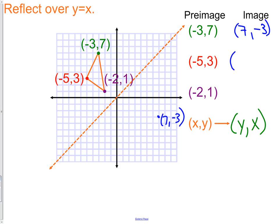That would be true about the red as well. Instead of being at (-5, positive 3), we're at positive 5, or positive 3, -5. Positive 3 and -5. Lastly for the purple dot, instead of being at (-2, positive 1), I go to (positive 1, -2).